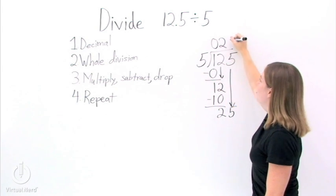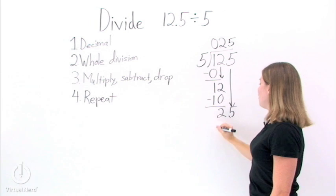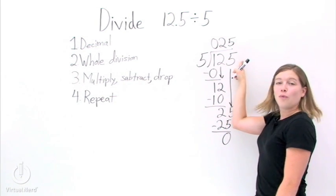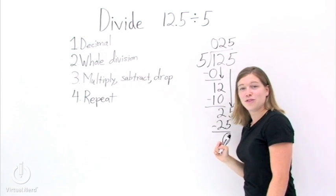25 divided by 5. That goes 5 times. 5 times 5 is 25. If we subtract these two, we get 0. And we're out of digits in our dividend. That means we don't have a remainder. So we're done, right?